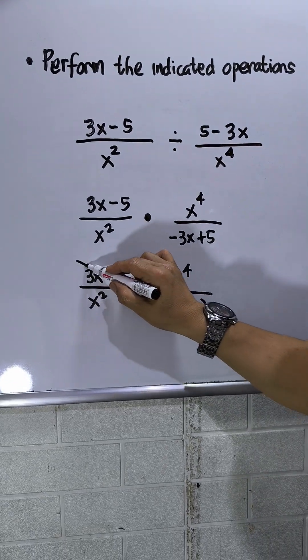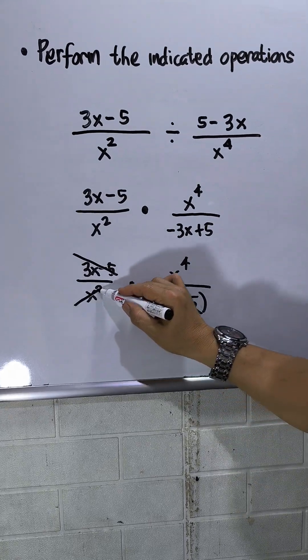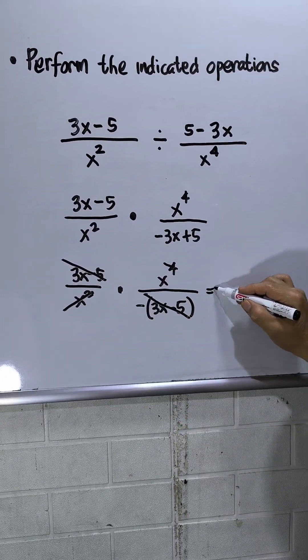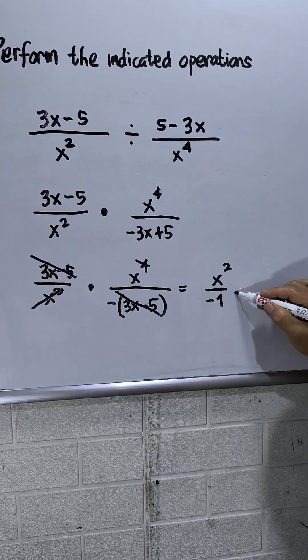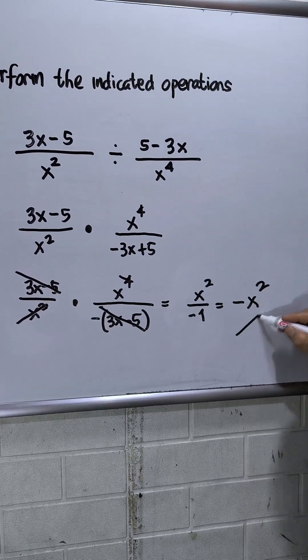So 3x minus 5 will be crossed out, then x squared will be crossed out. So I have now x squared over negative 1. So this will be equal to negative x squared.